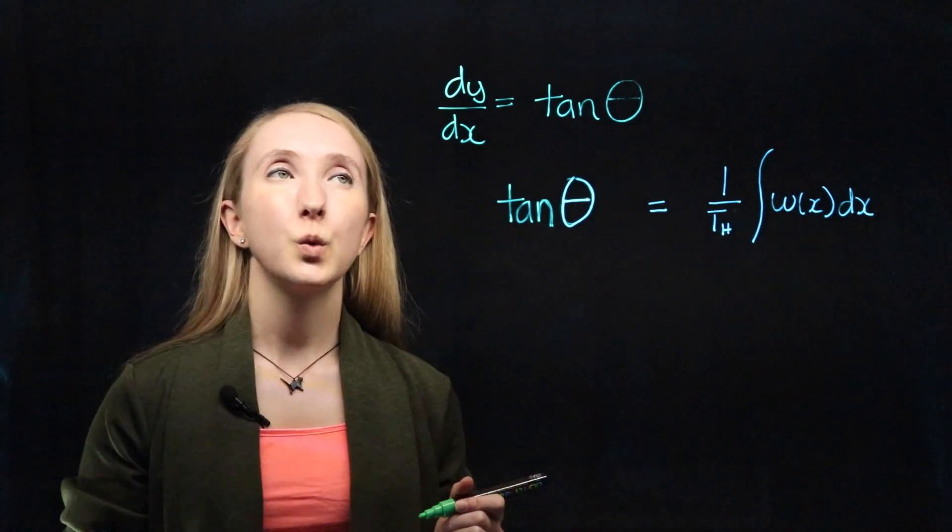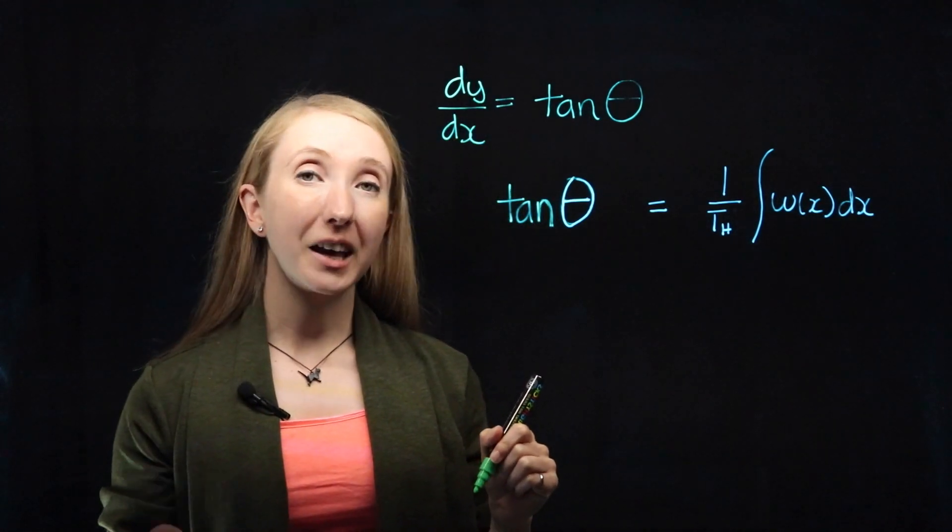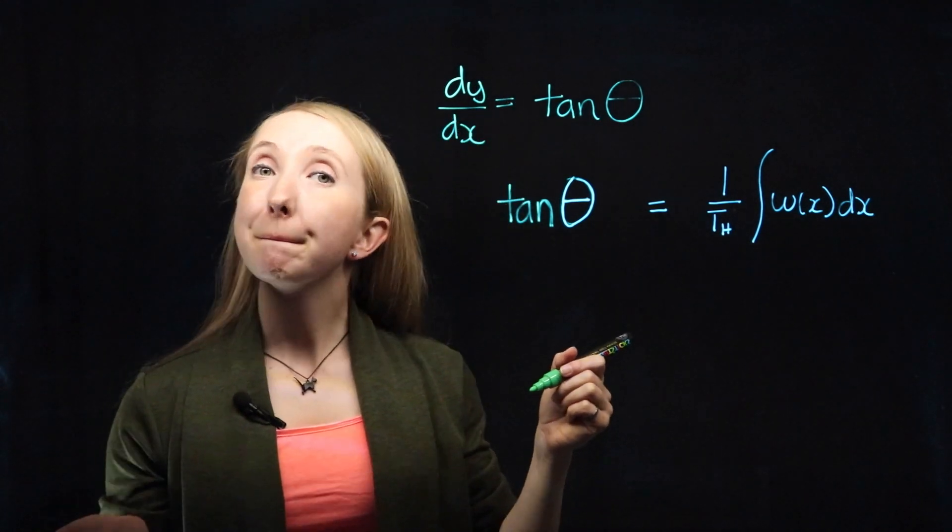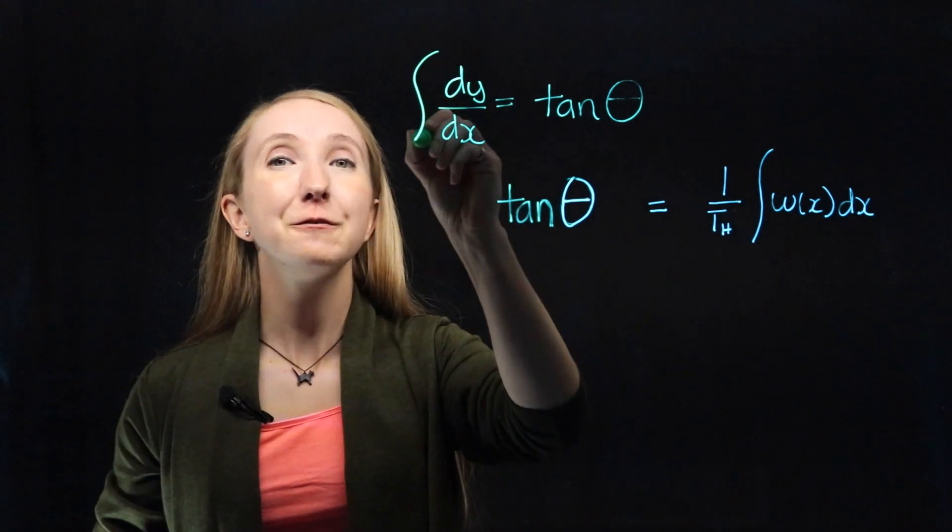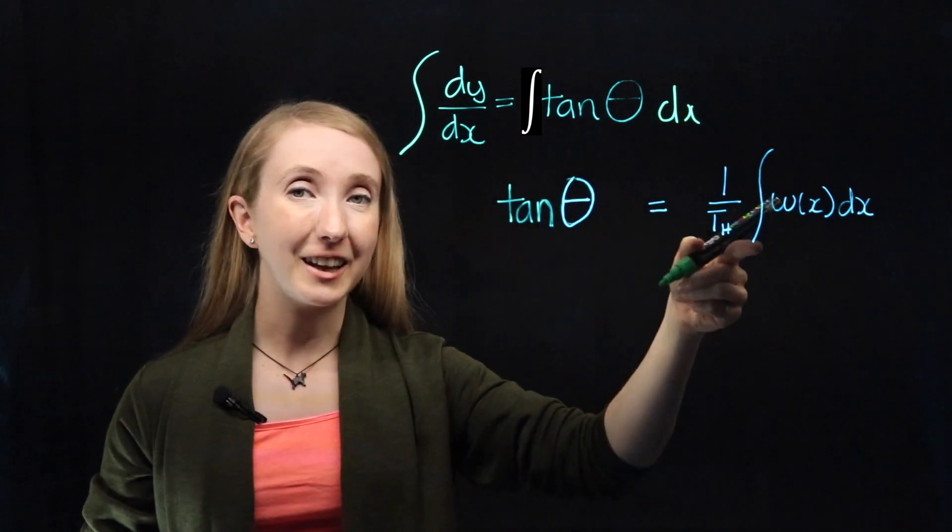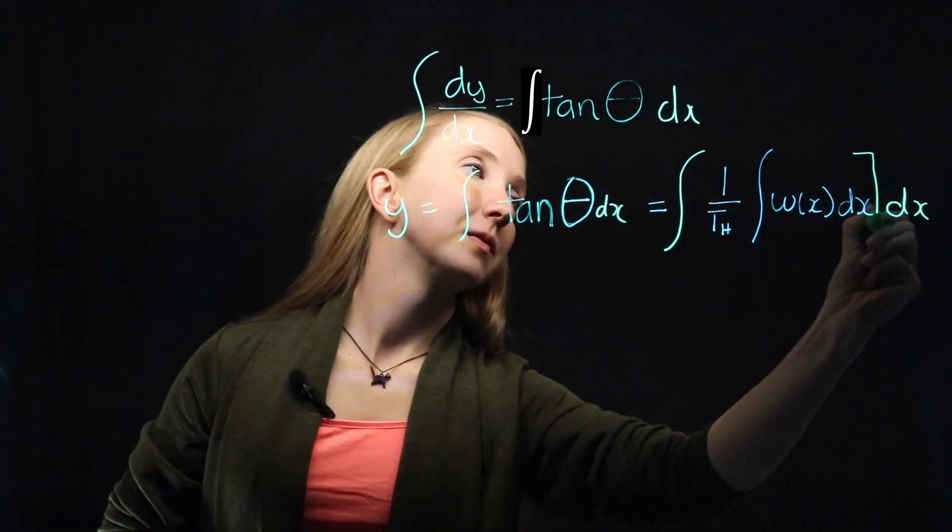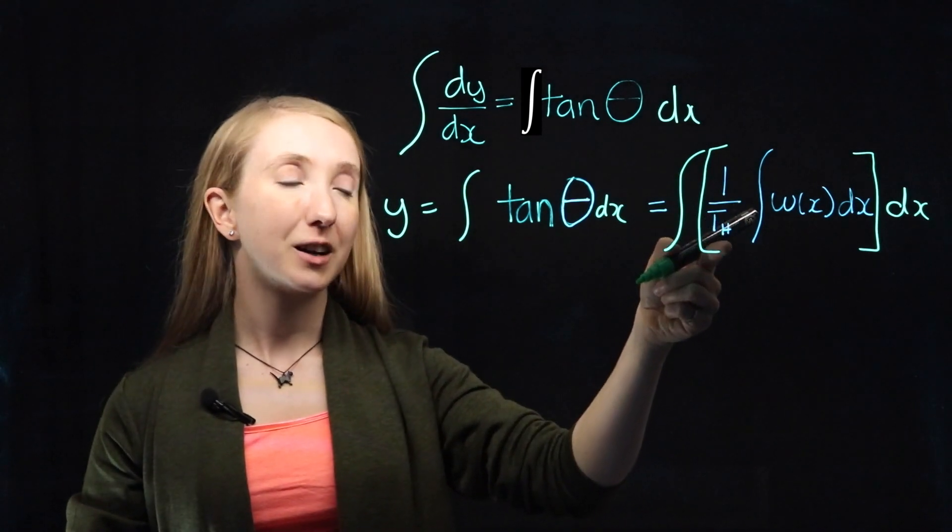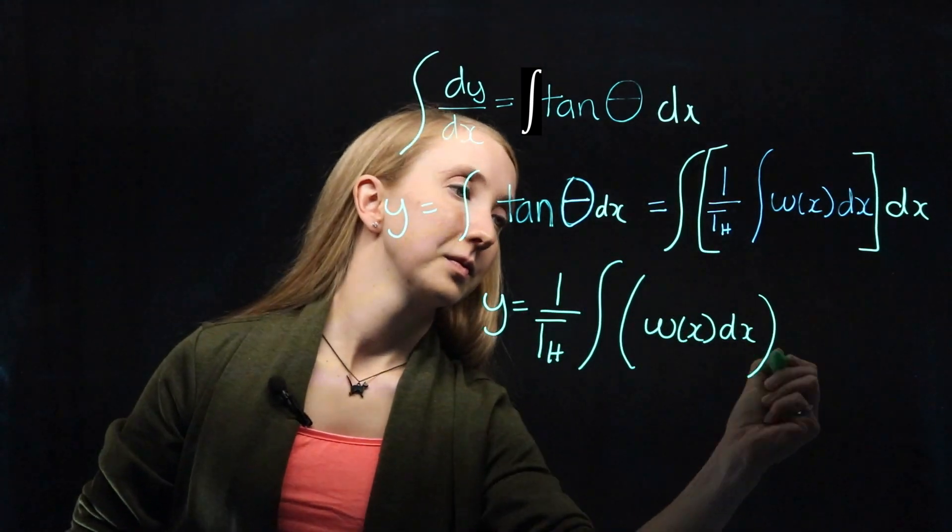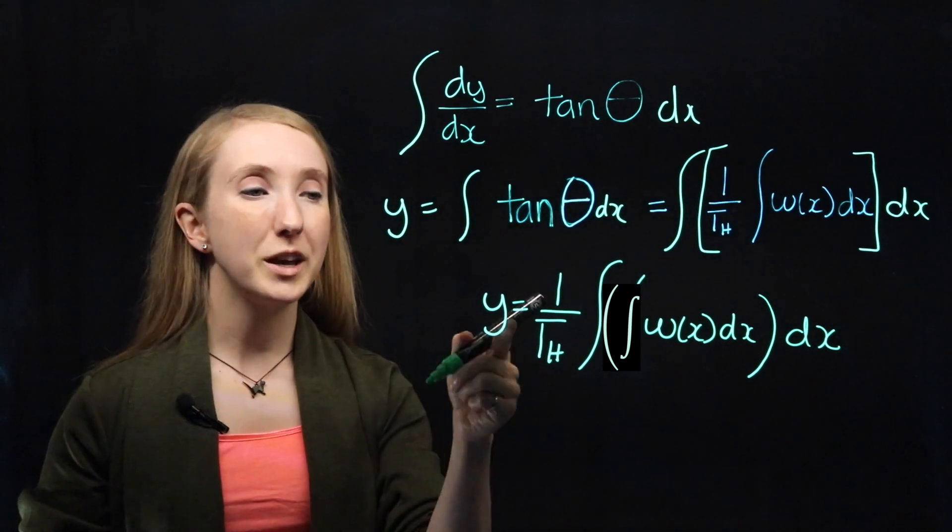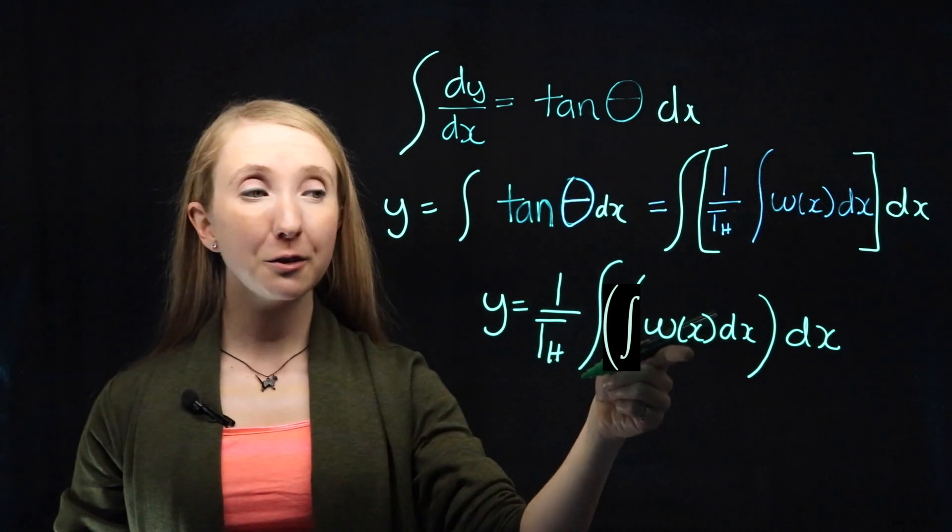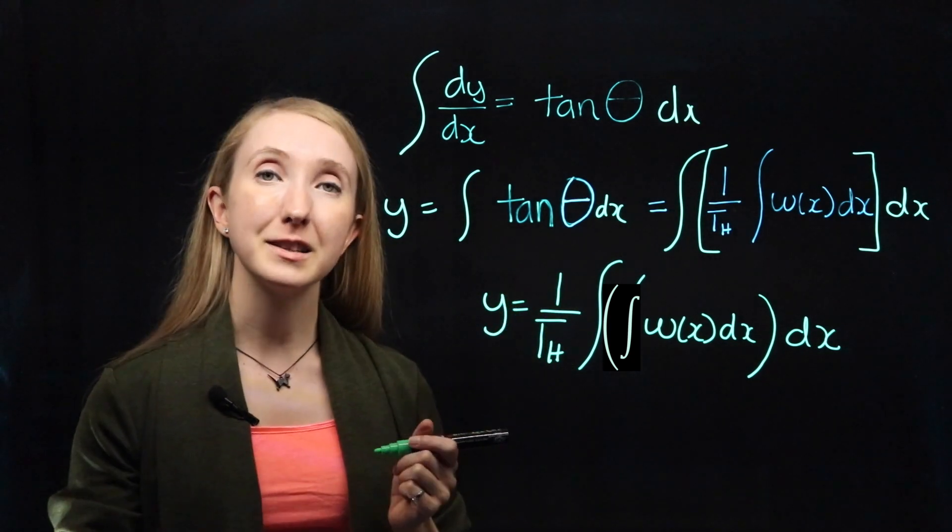What we're after is an equation for Y, which is the geometry of our cable under distributed load. So to get Y, we would want to... Integrate! Your favorite thing to do! So integrating this means that we are integrating this. And since TH is a constant, we can pull it in front of our integral sign. So we get that the equation for the geometry of our cable under distributed load is equal to the double integral of our loading function times 1 over our constant horizontal tension.